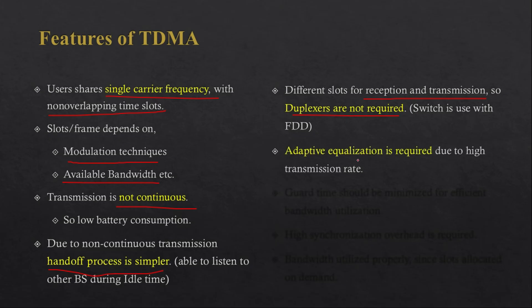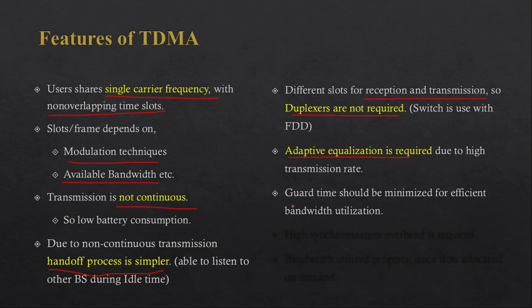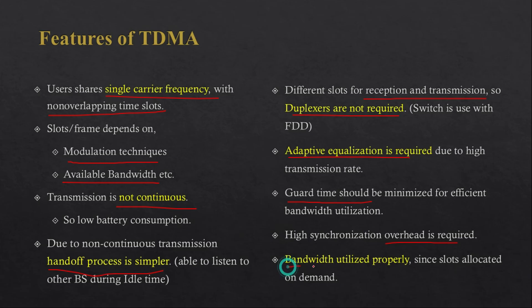Because data is transmitted at a very high rate, TDMA requires adaptive equalization to avoid interference. Guard time is also required and should be minimized for efficient bandwidth utilization. TDMA also requires a high synchronization overhead, which increases its complexity. However, TDMA utilizes bandwidth properly since slots are allocated on demand.